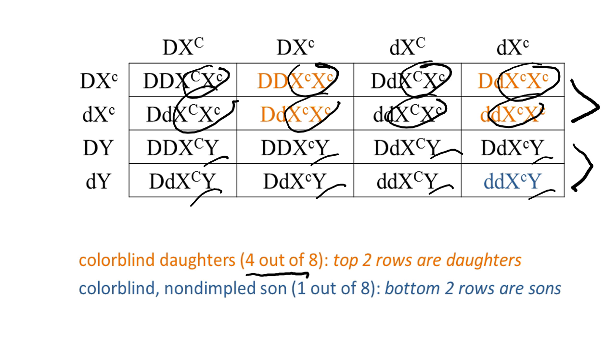In the case of a colorblind non-dimpled son, there is only one out of eight chance that they would have a son with those two traits. The important thing to remember is that in a sex-linked problem, if we ask for sons or daughters, we only look at those boxes. And if we ask for a child having a particular trait, we look at all 16 boxes.